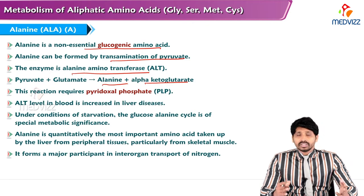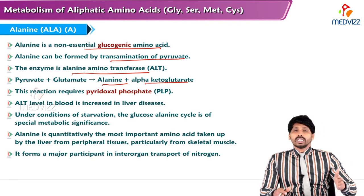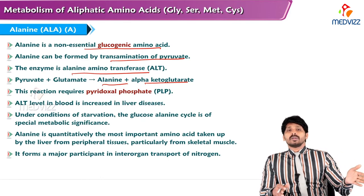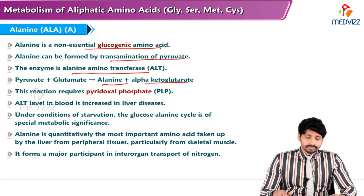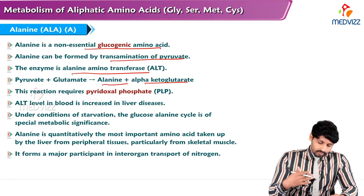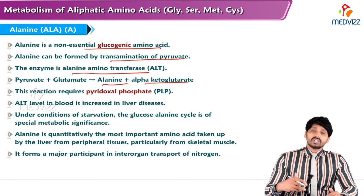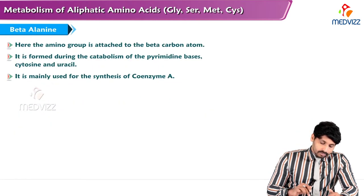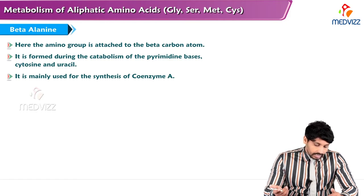Under conditions of starvation, the glucose-alanine cycle provides energy by transporting alanine from muscles to the liver, where alanine is split into pyruvate (a glucogenic substance) and ammonia is diverted into urea formation. Alanine is quantitatively the most important amino acid taken up by the liver from peripheral tissues, particularly skeletal muscles, and is a major participant in inter-organ transport of nitrogen.